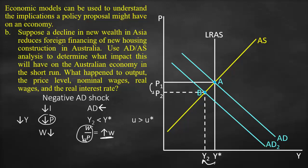You might ask why we didn't reduce W here even though we said nominal wage will be lower. In the short run, people work on contracts that cannot be changed immediately — nominal wages for those under contract cannot be updated until the contract expires. However, any person without a contract will receive a new, lower nominal wage.